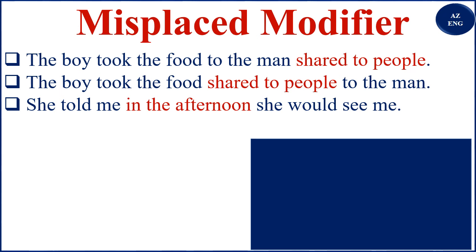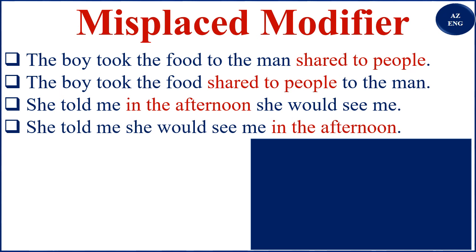'She told me in the afternoon she would see me' — this is ambiguous: did she tell me in the afternoon, or did she say she would see me in the afternoon? To be clear, we place it as: 'She told me she would see me in the afternoon.' Now it's clear that what she said was she would see me in the afternoon, not that she said the thing in the afternoon.